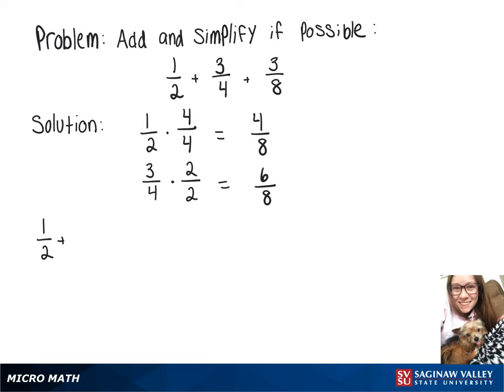Now we can take our original problem, 1 over 2 plus 3 over 4 plus 3 over 8, and write it as 4 over 8 plus 6 over 8 plus 3 over 8.